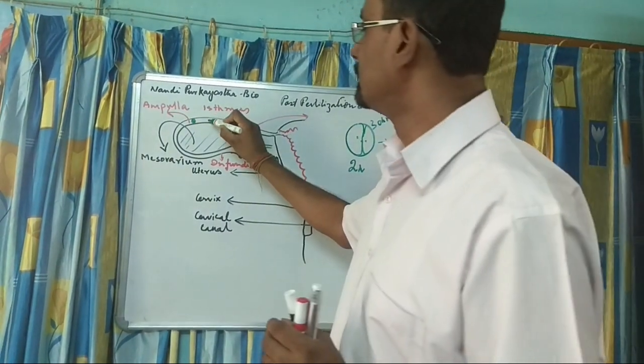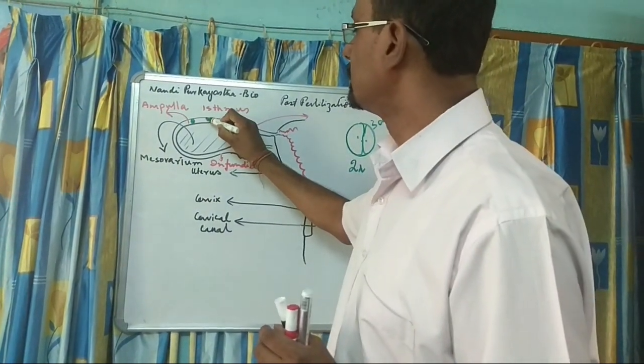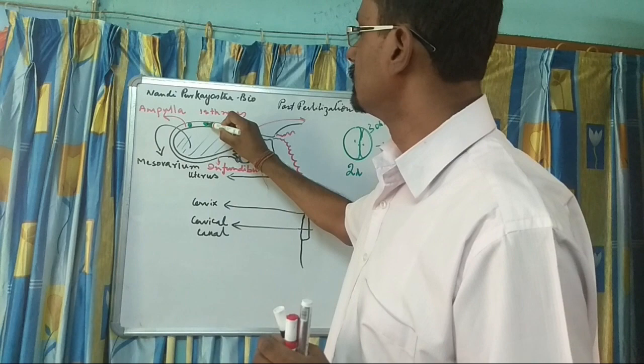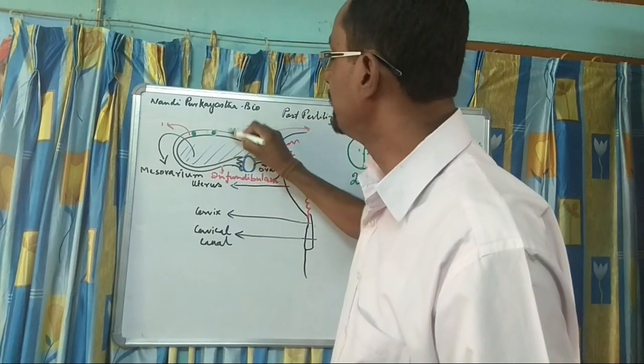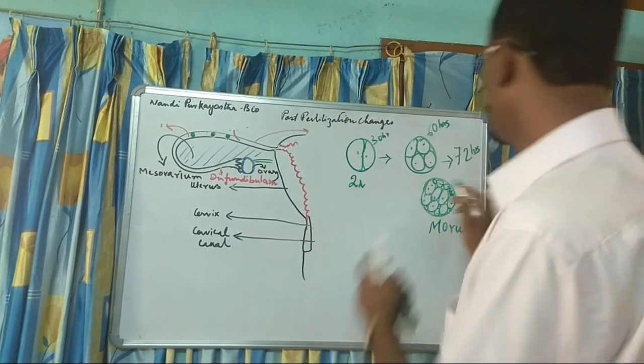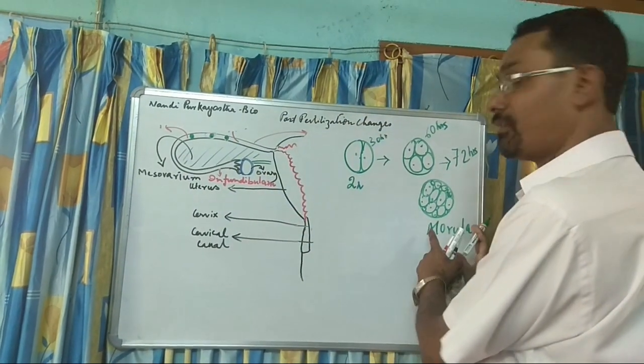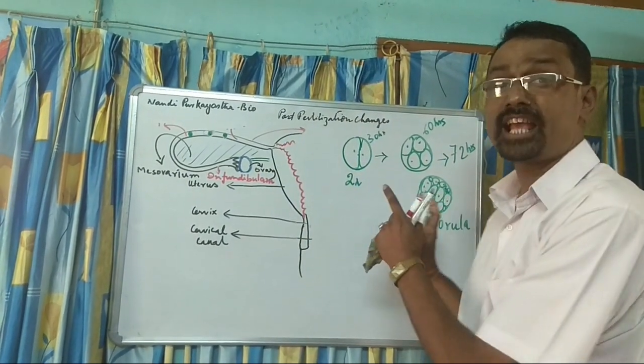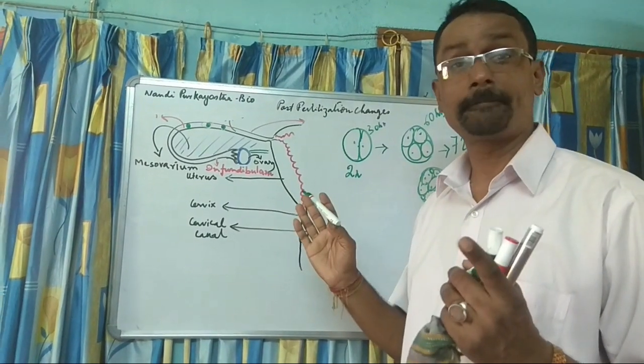The Morula is a solid ball of cells containing 16 to 32 cells, and it continues moving along the fallopian tube toward the uterus.